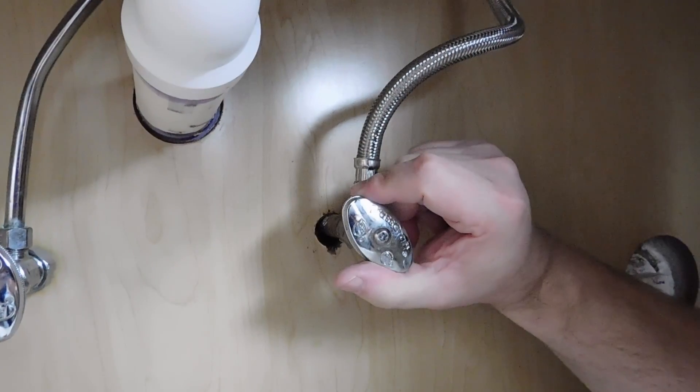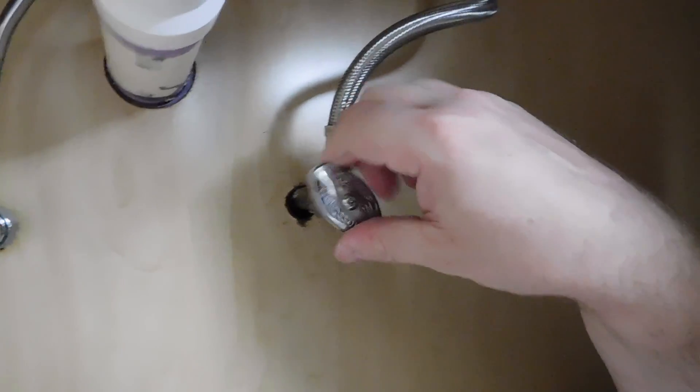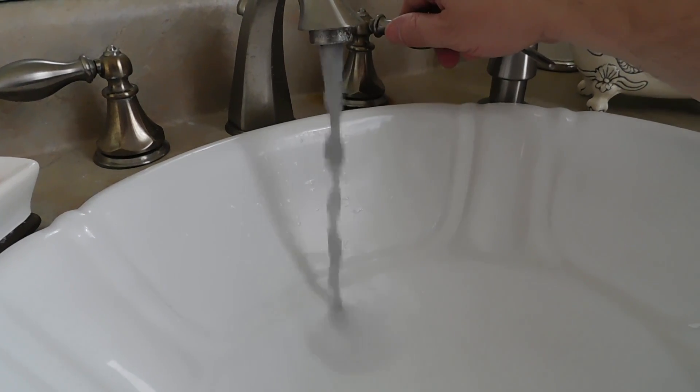Thoroughly dry the area so that any leaks may be detected. Turn on the supply valve and then turn on the faucet valve. This will remove any air in the line.